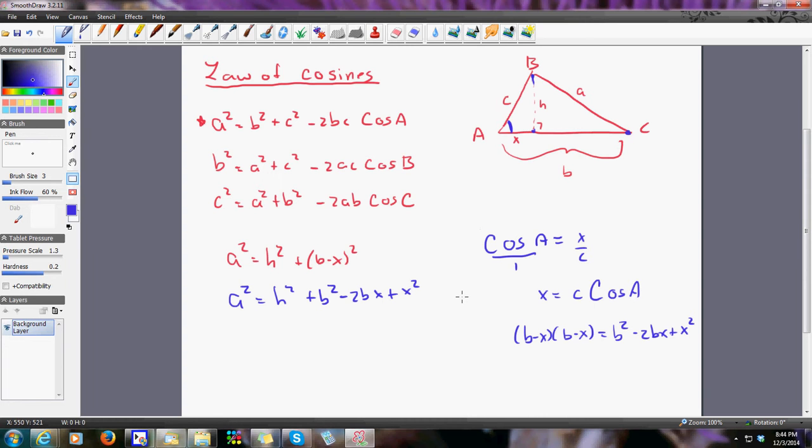Now let's see, h² + x² really equals c². So a² equals—I'm going to get rid of this and this—I'm going to write in c² + b² - 2bx. That's where that came from, and that's where this came from.